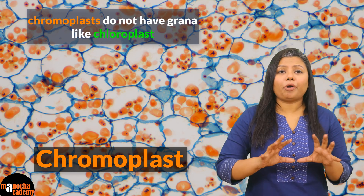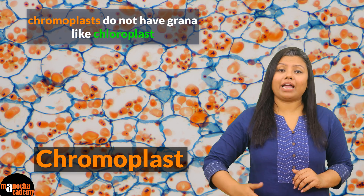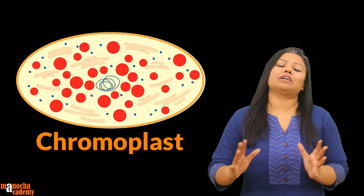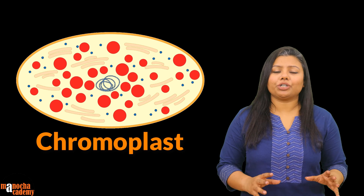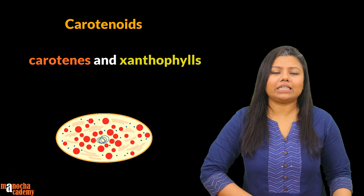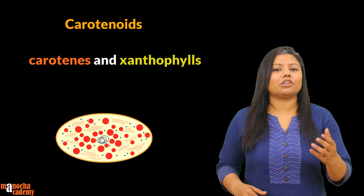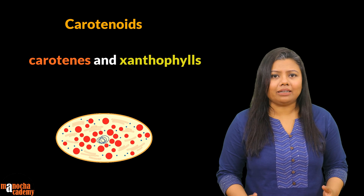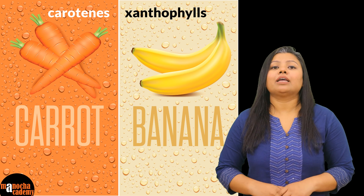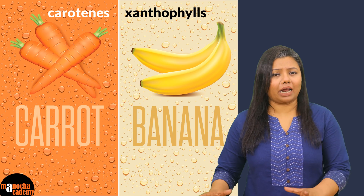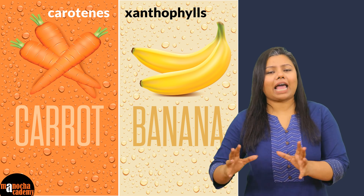They do not have proper formation of grana inside them like we would find in chloroplasts, but they can get converted into chloroplasts if necessary. The pigments that are present inside the chromoplasts are usually carotenoids which consist of carotene and xanthophyll. Carotene is an orange colored pigment that we find very abundantly in carrots, and xanthophyll is a yellow colored pigment which we find frequently in banana. The yellow color of ripe banana is because of xanthophyll. Apart from these carotenoids, chromoplasts can have several other types of pigments which impart a variety of colors to different fruits and flowers.